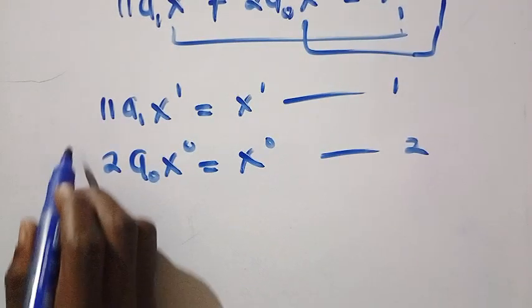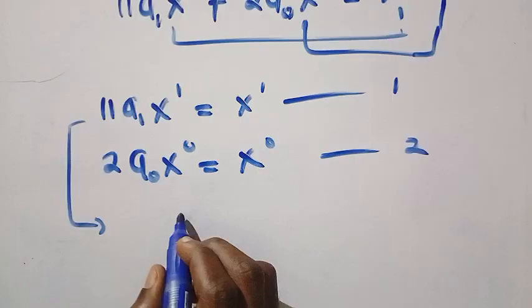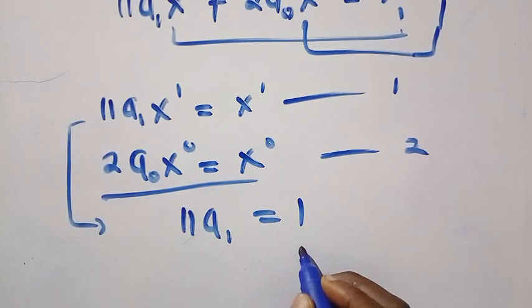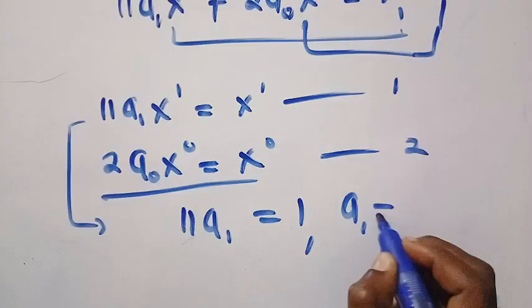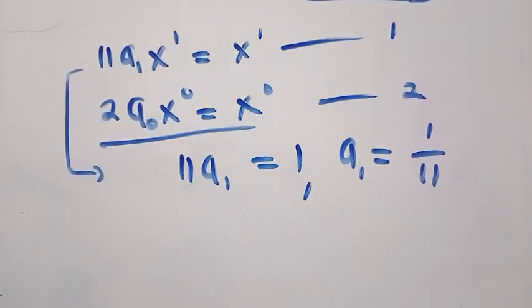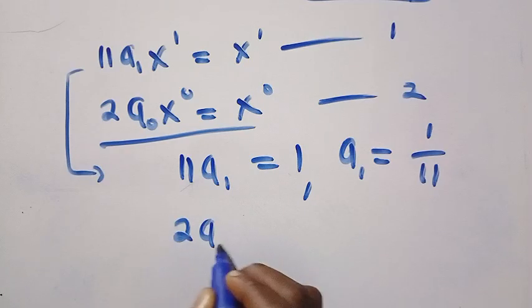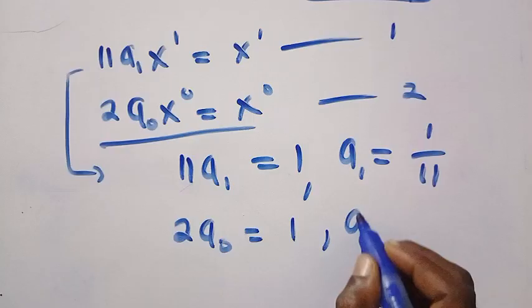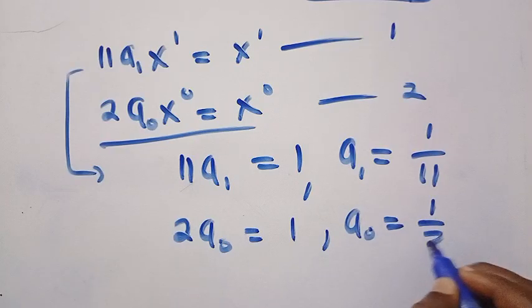So looking at their coefficients, we have the first one here, which is 11a_1 equals 1. Therefore, our a_1 equals 1 divided by 11. And also, we will consider for the a_0, we are going to have 2a_0 equals 1. And we have a_0 as 1 divided by 2.